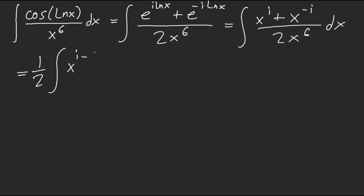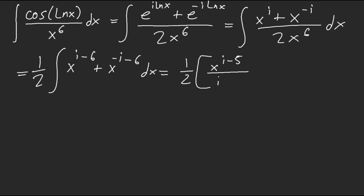So we integrate (1/2)[x^(i-6) + x^(-i-6)] dx, which gives (1/2) · [x^(i-5)/(i-5) + x^(-i-5)/(-i-5)]. The hardest part here is manually turning it back into real numbers, because this was a real function — we complexified it and have to convert back. The most annoying part is conjugating: you have to be very careful.